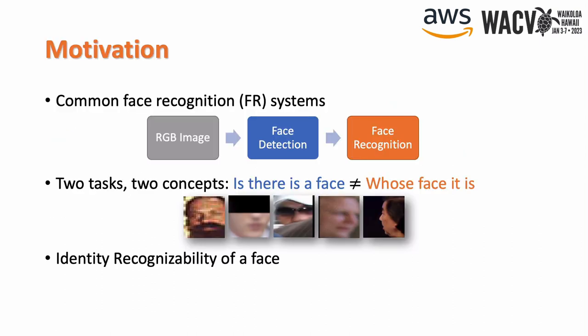The common implementation of face recognition systems as a cascade of a detection stage and a recognition stage can cause problems beyond failures of the detector. When the detector succeeds, it can detect faces that cannot be recognized no matter how capable the recognition system is. Therefore, we argue that the latent variable of face identity recognizability should be factored into the design and implementation of face recognition systems.